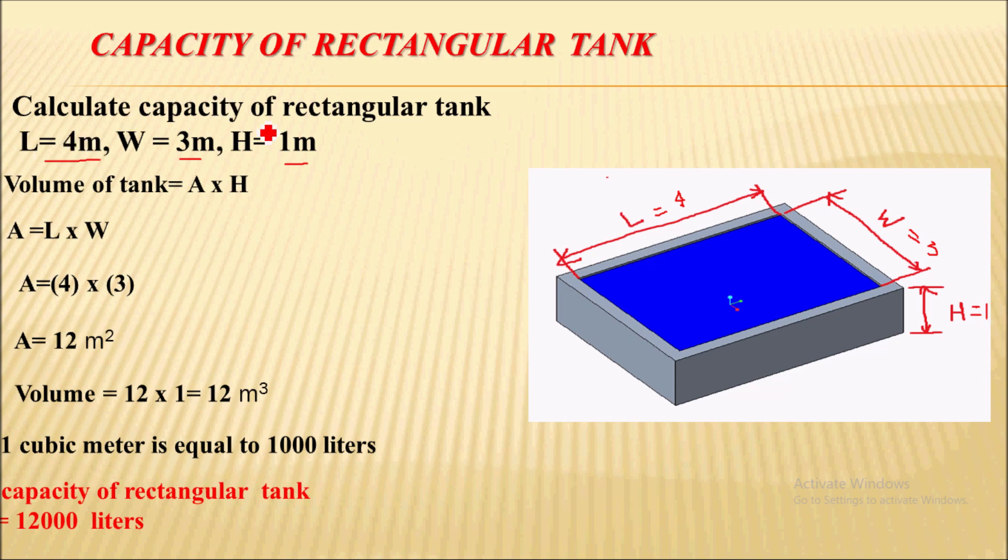So to calculate the capacity we should calculate the volume of a tank. So volume is nothing but area into the height for this rectangular tank. So what is the area of this rectangular tank? That is nothing but length into width. So length is 4 meter over here and the width is 3 meter. So if we calculate we get 12 meter square that is the area of this tank.